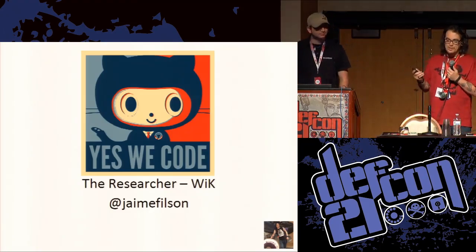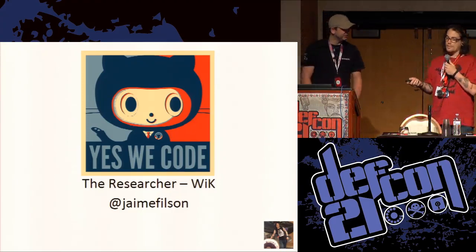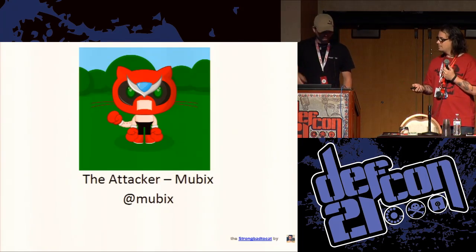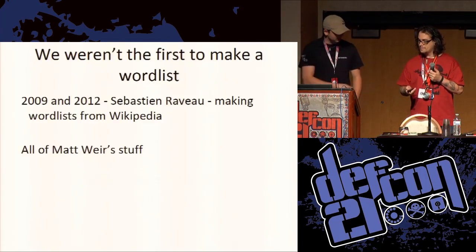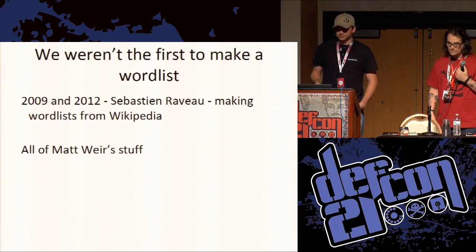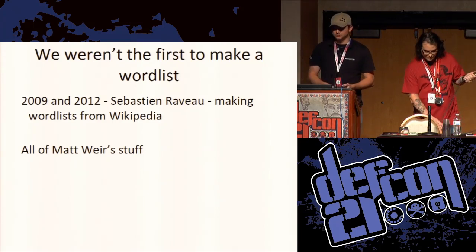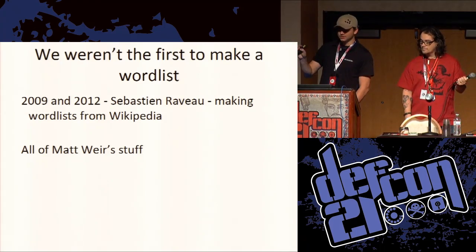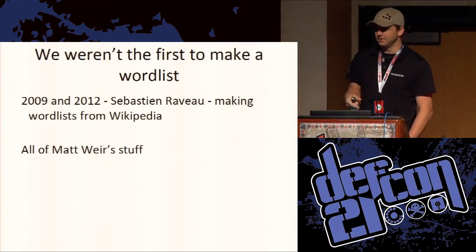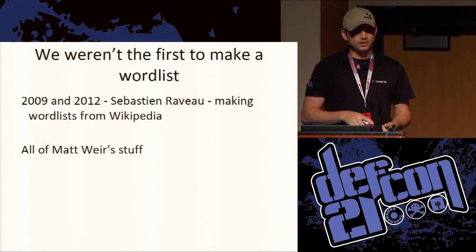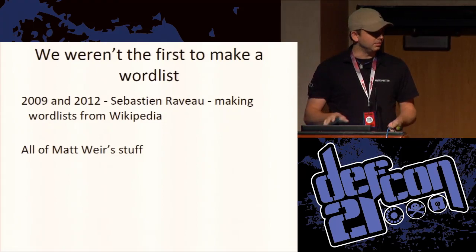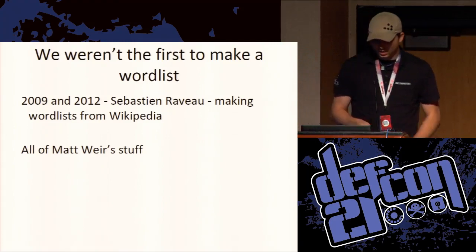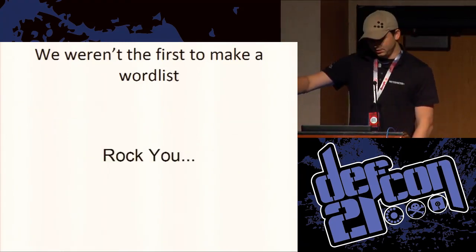So I did most of the research — I did all the research. We're not the first ones to make word lists. In 2009 and 2012, Sebastian Riv, the French something, made word lists from Wikipedia. He's an awesome guy, I'm not trying to make fun of him. But also all of Matt Weir's stuff — if you haven't used Matt Weir's keyboard dictionary, it's one of the best ones to find people who just used, you know, along the way.